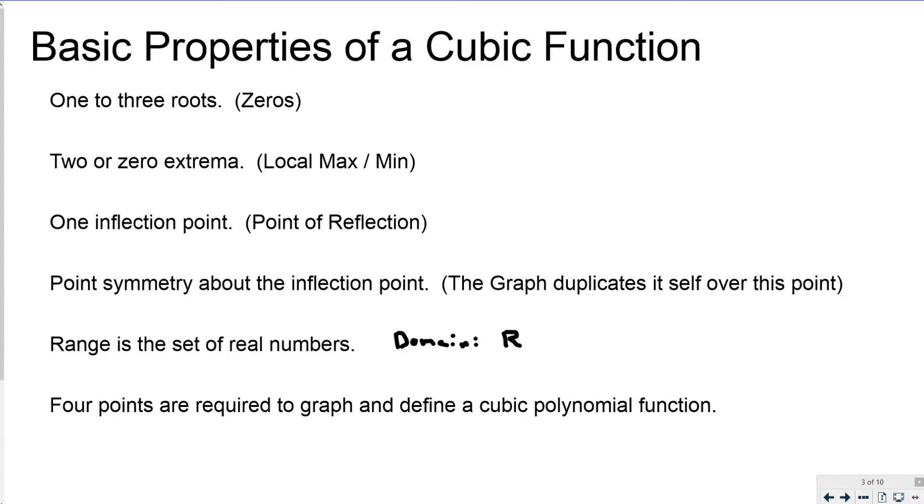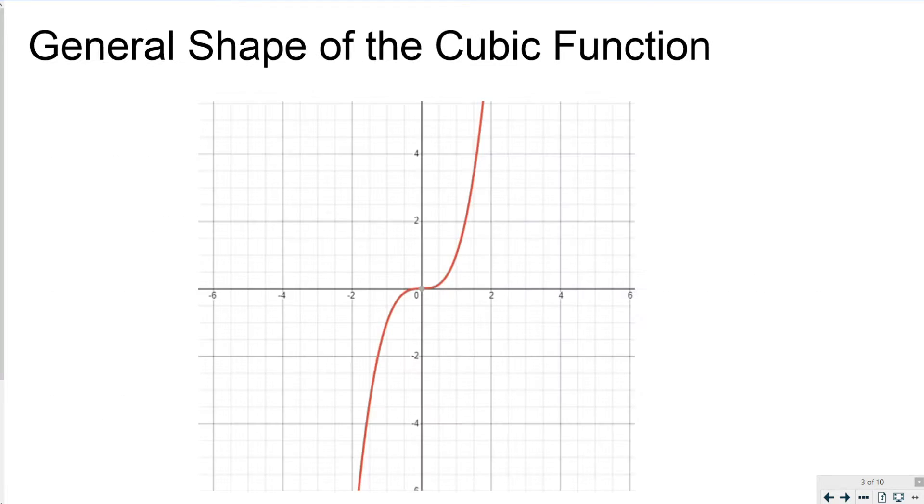Usually the 4 points that you can use are its zeros and its y-intercept. But if you don't have three zeros, you can always use some of the extrema, like local max, local min. So let's take a look at a general shape of the cubic function.